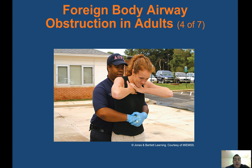For sudden severe obstruction in responsive adults and children older than one year, the abdominal thrust maneuver — Heimlich — is recommended. To find hand placement, feel for the patient's hip bone and go just above it, at or above the belly button. Then perform inward and upward thrusts.